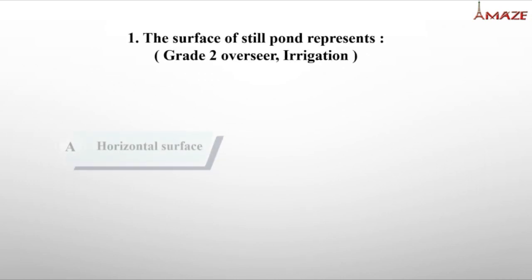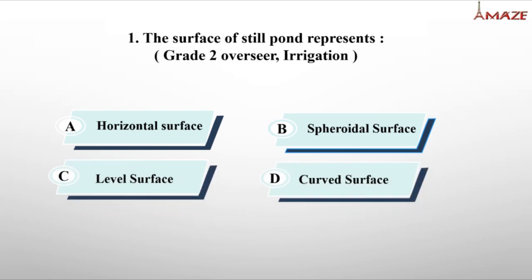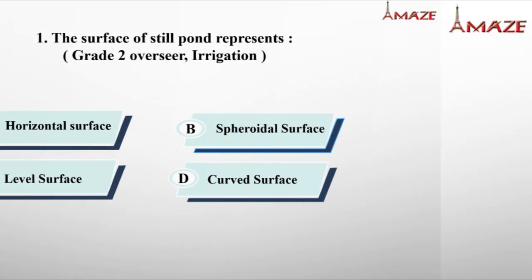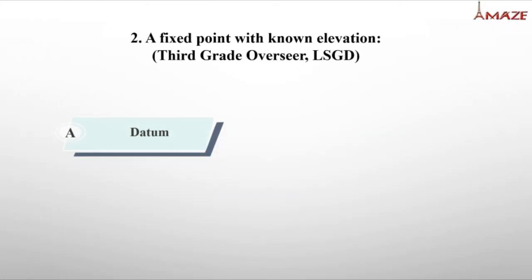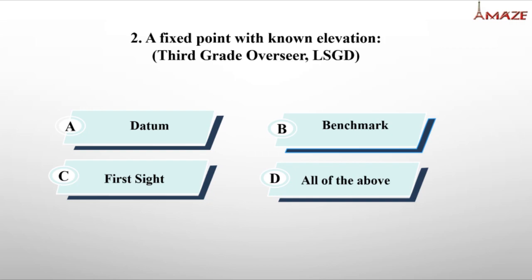Let's look at the first question: 'The surface of a still pond represents?' Options are horizontal surface, spheroidal surface, level surface, curved surface. The answer is level surface. Next: 'A fixed point with known elevation is known as?' — a datum is a surface, not a fixed point. The correct answer is option B, benchmark.